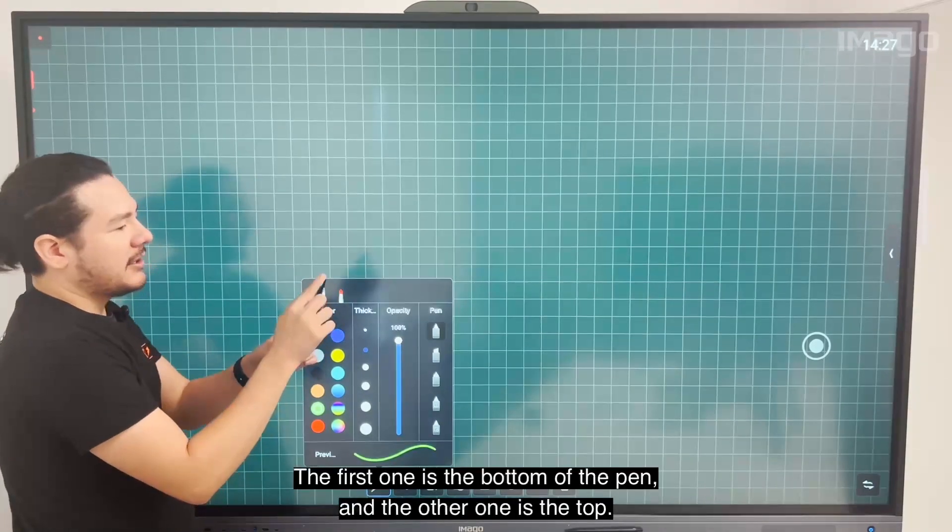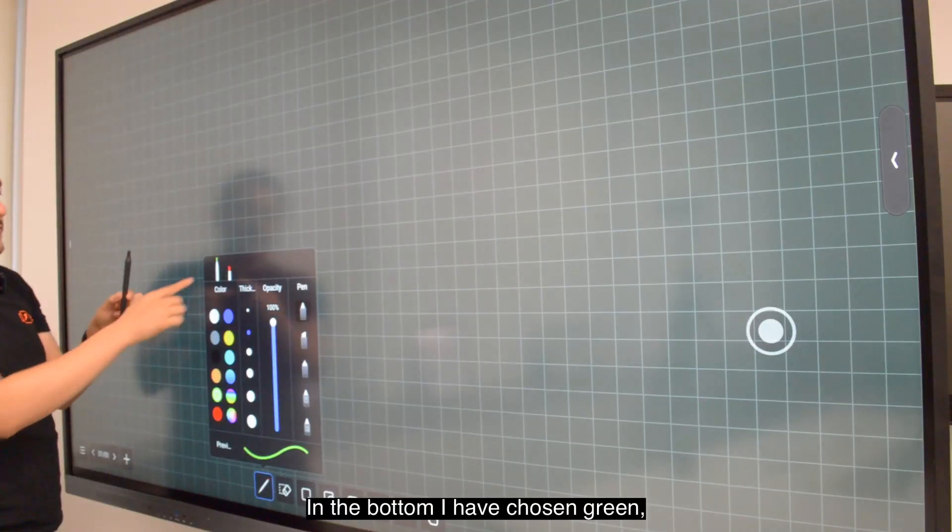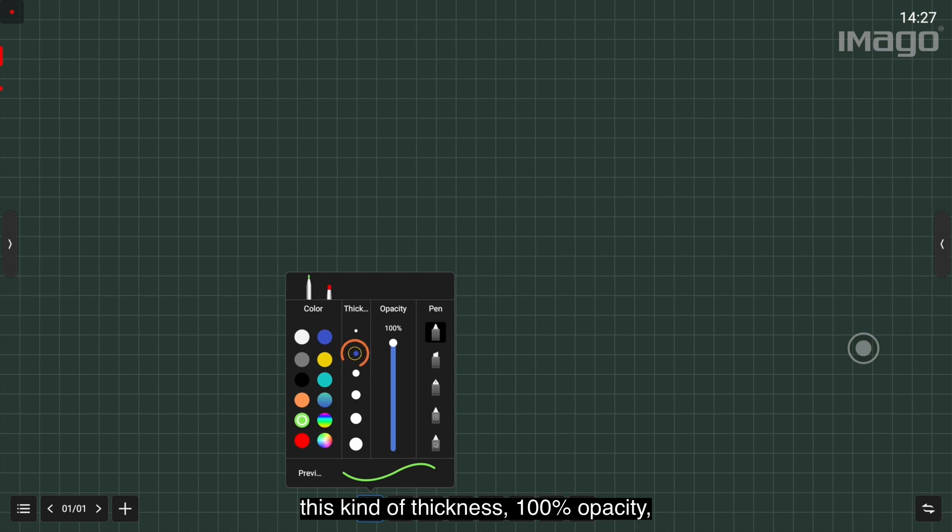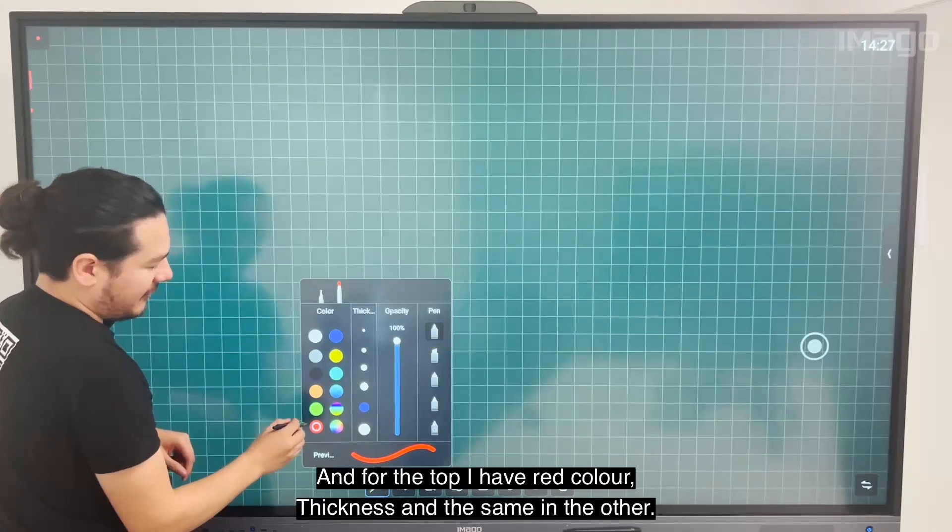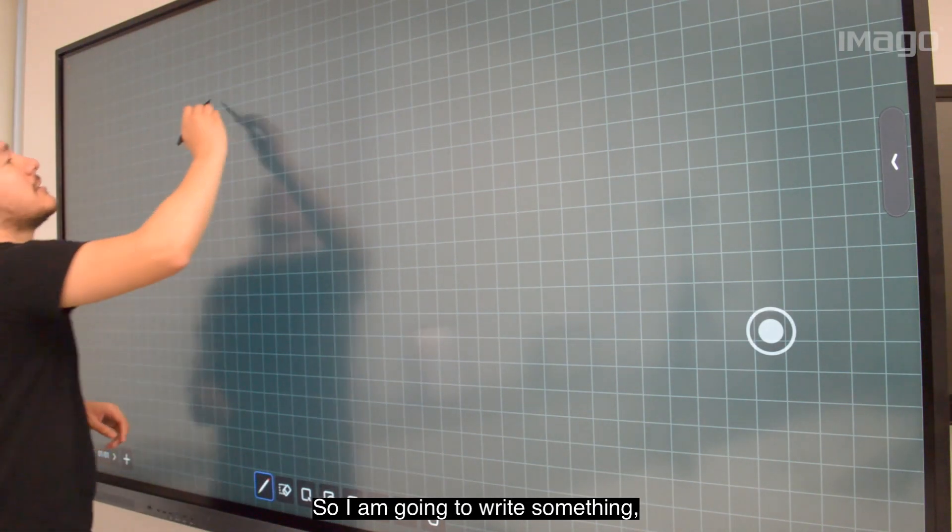In the bottom I have chosen green with this thickness, 100% opacity, and this pen style. For the top I have red color, a little more thick, and the same for the other settings. I'm going to write something with both parts of the pen.